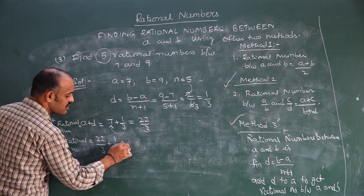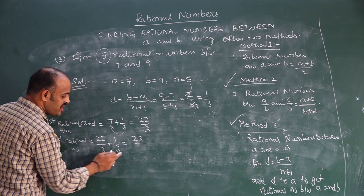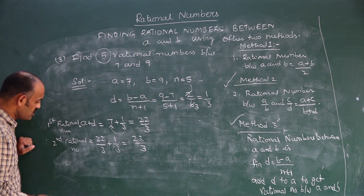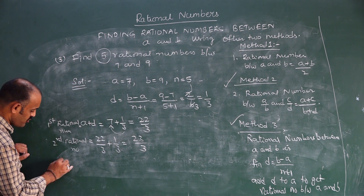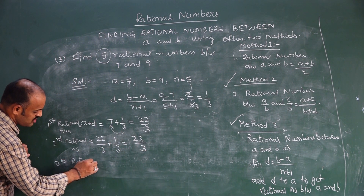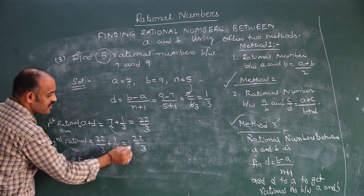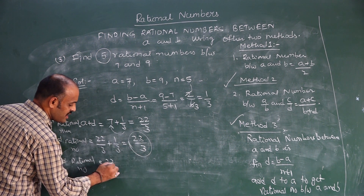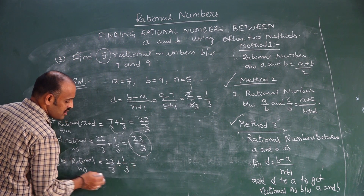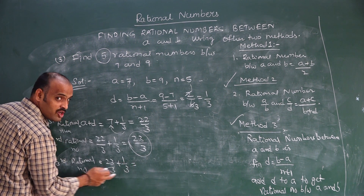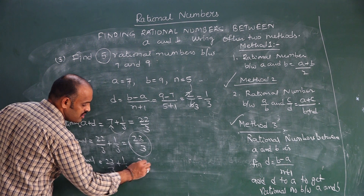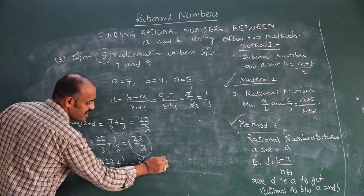For the second rational number, add d which is 1 by 3 to 22 by 3. Since the denominators are the same, we add the numerators: 22 plus 1 gives 23 by 3. For the third rational number, add d again: 23 plus 1 gives 24 by 3, which equals 8. So 8 lies between 7 and 9 — confirming our work is correct.